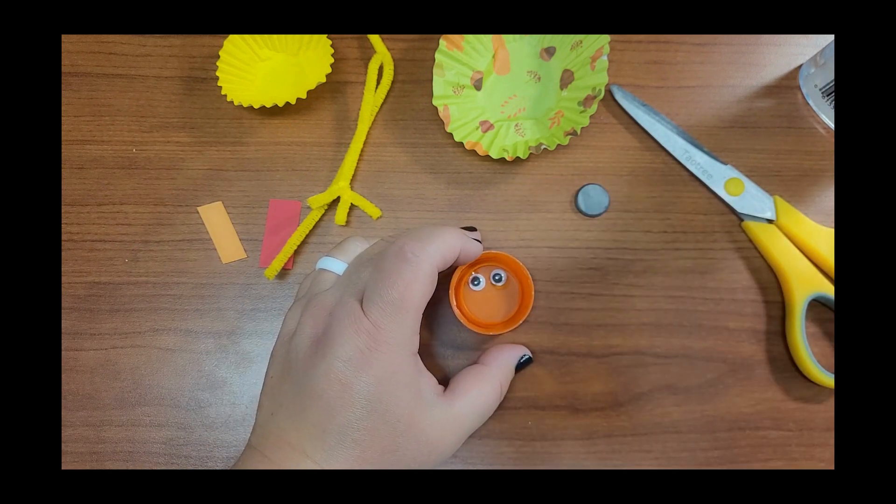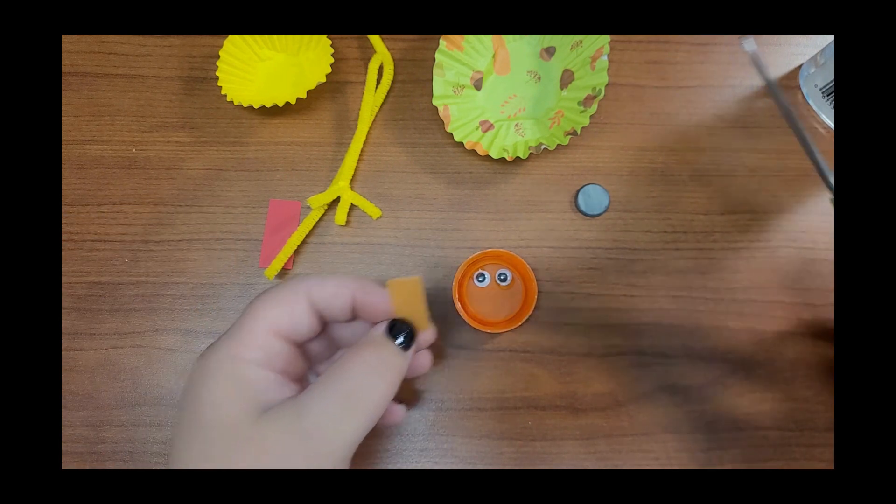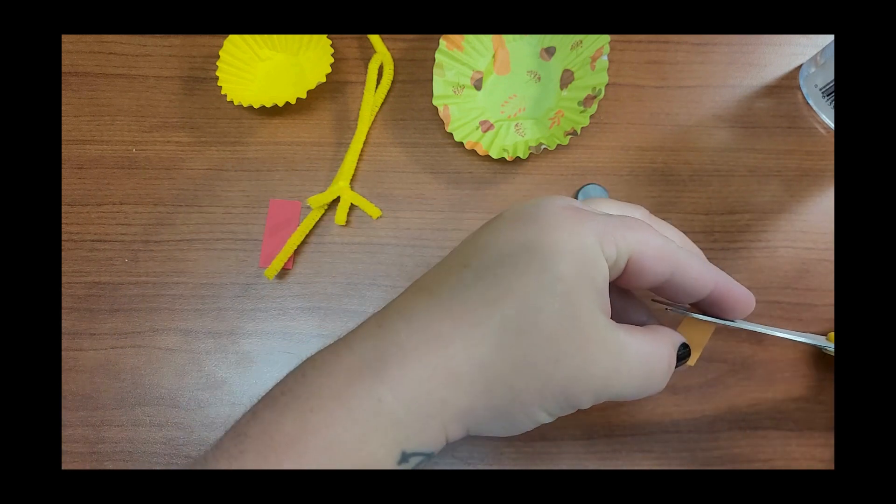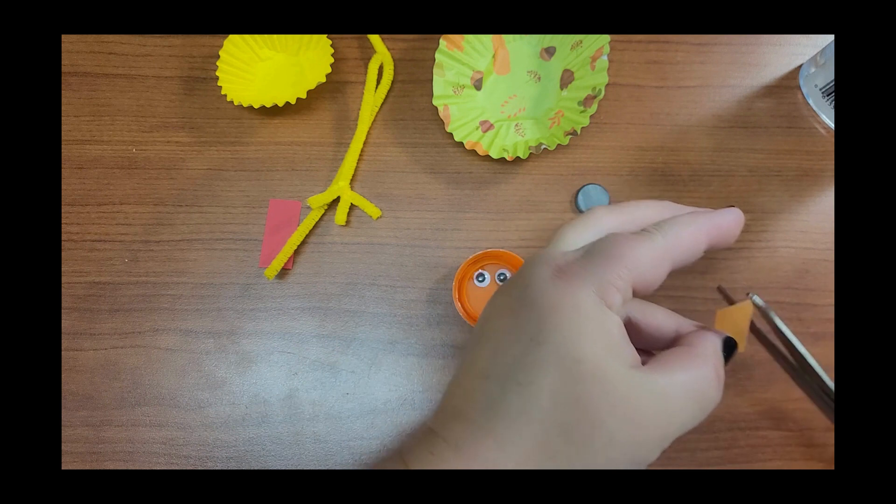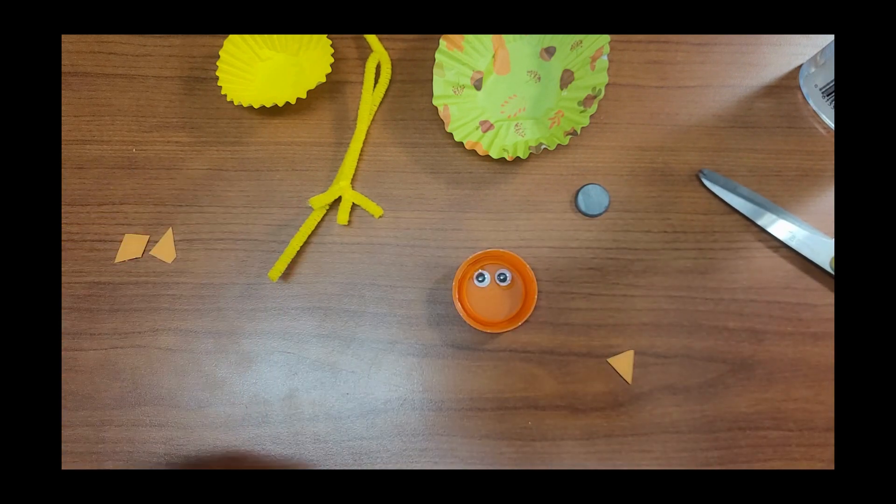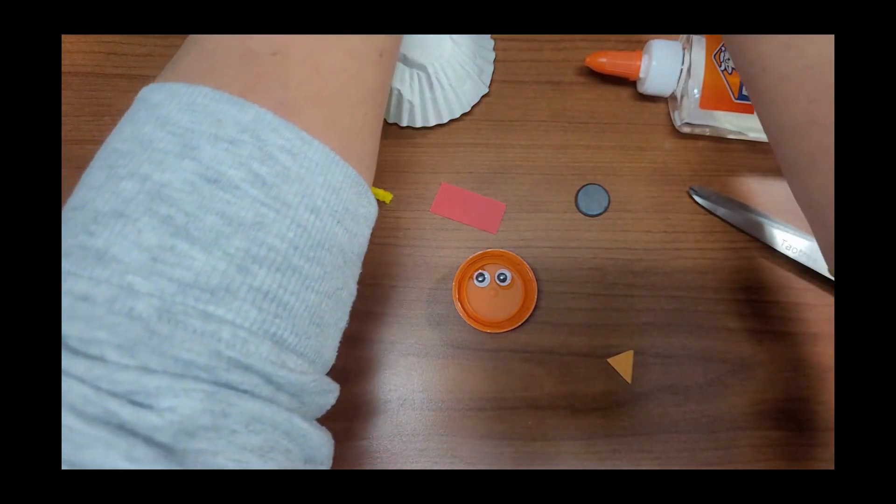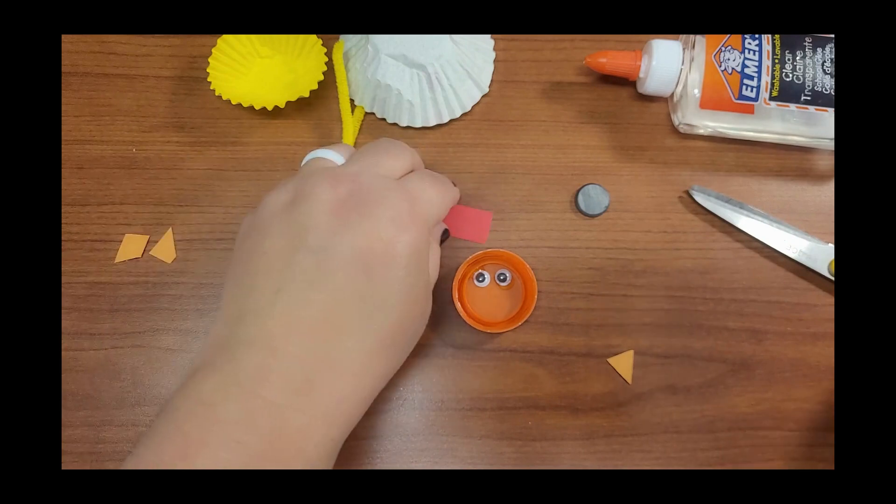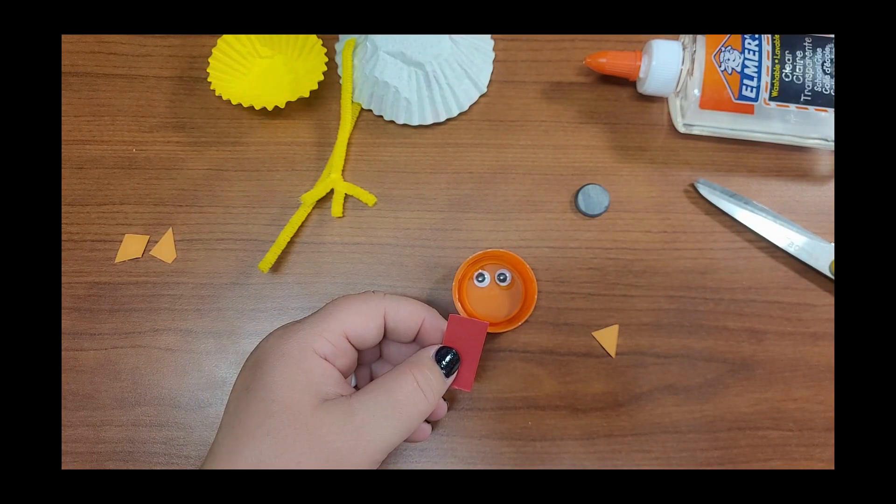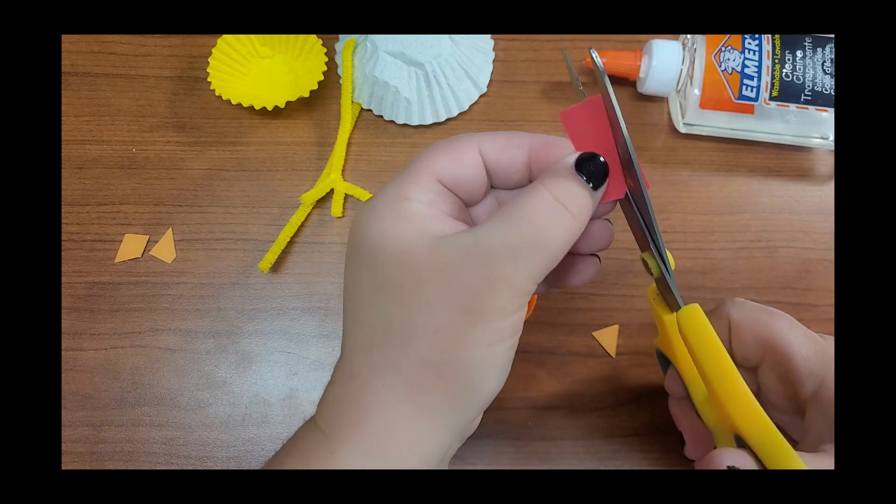And then we're going to make our turkey's beak with the orange paper, so you're going to get your scissors and cut a triangle. And then you're going to make, what's that red part of a turkey called? Let's see... waddle! You're going to make its waddle out of the red paper, so you're just going to kind of cut a squiggly line that looks like a turkey waddle.